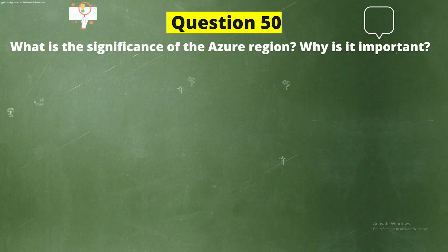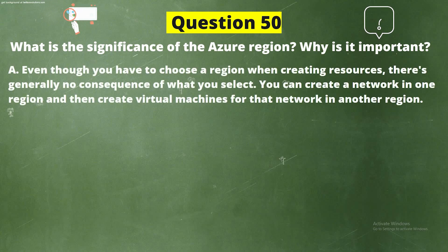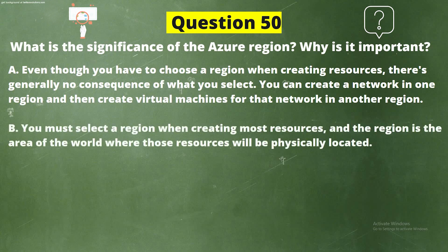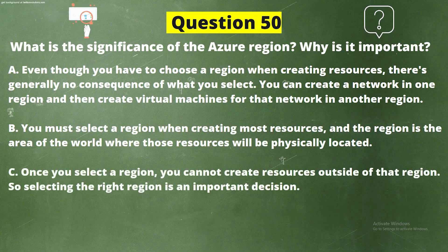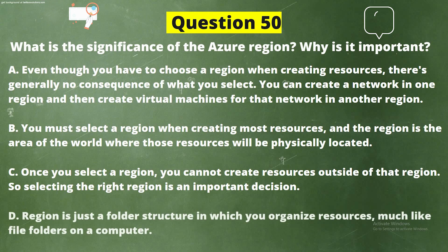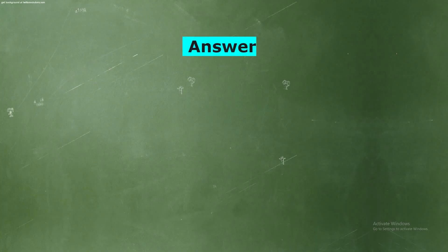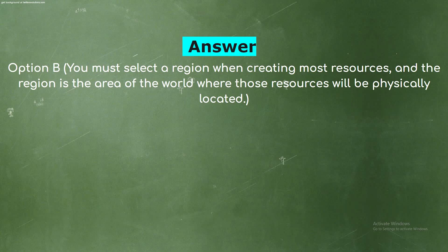Question 50: What is the significance of the Azure region? Why is it important? Option A: Even though you have to choose a region when creating resources, there's generally no consequence of what you select — you can create a network in one region and create virtual machines for that network in another region. Option B: You must select a region when creating most resources, and the region is the area of the world where those resources will be physically located. Option C: Once you select a region, you cannot create resources outside of that region. Option D: Region is just a folder structure in which you organize resources. The correct answer is Option B.